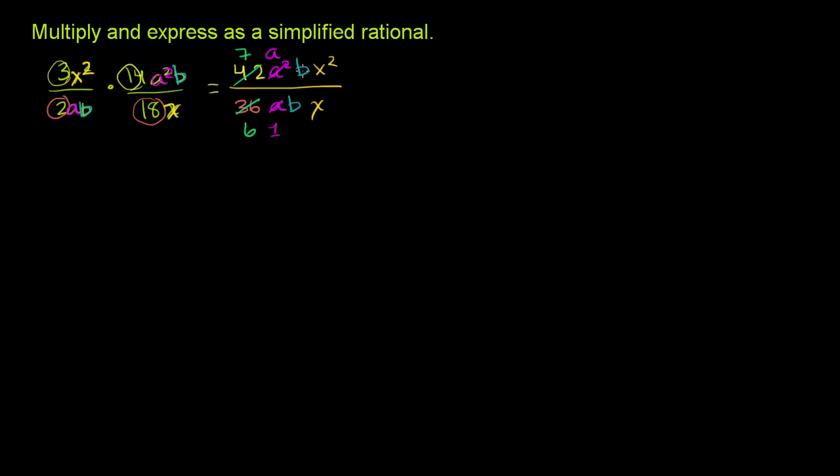And then I have a b divided by b. Well, I can divide both the numerator and the denominator by b. And so those two characters will cancel out to just 1 and 1. You don't even have to write it when you multiply by 1. It doesn't change the value. And then I have an x squared divided by x. They're both divisible by x. x squared divided by x is x. x divided by x is 1.